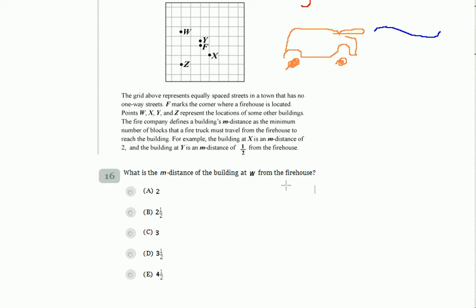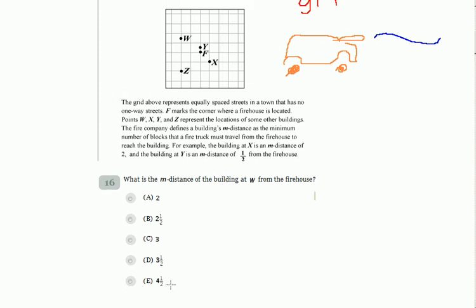What is the M distance of the building at W from the firehouse? And we shall answer this question. M is the minimal distance which the truck must cross and must go for reaching this point.